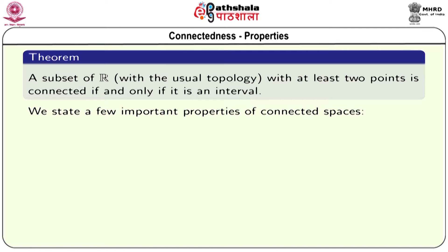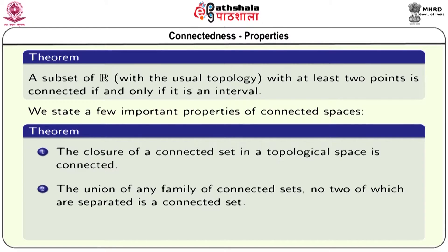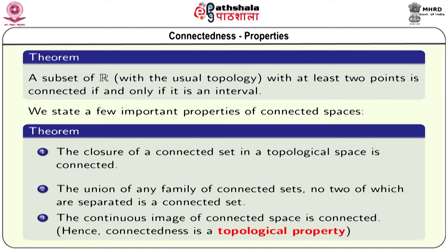This theorem gives us the precise collection of connected sets in the real line: a subset of R with the usual topology having at least two points is connected if and only if it is an interval. We state a few important properties of connected spaces: the closure of a connected set in a topological space is always connected; the union of any family of connected sets, no two of which are separated, is a connected set; the continuous image of a connected space is connected; therefore connectedness is a topological property.